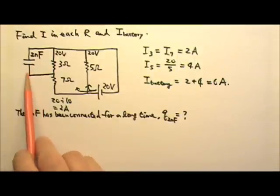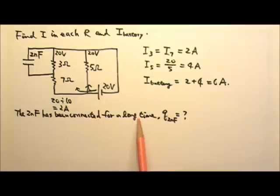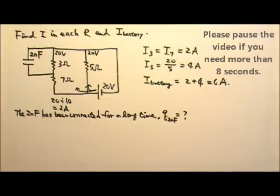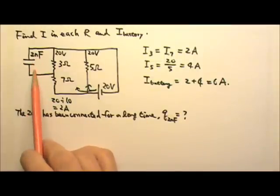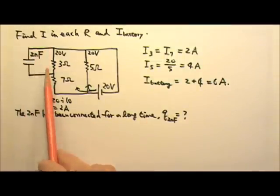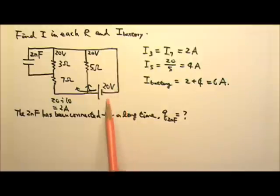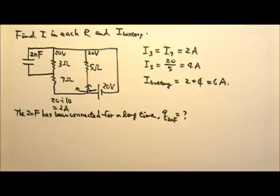Now I'm adding a 2nF capacitor to this part of the circuit. It has been connected for a long time, how much charge is on this capacitor? After a long time, the capacitor has been fully charged. So no more current is in this segment. That means we can cut the wires and take the capacitor away and nothing will be different. That means the current in the rest of the circuit is still the same as before. But of course, this capacitor is still connected to it.